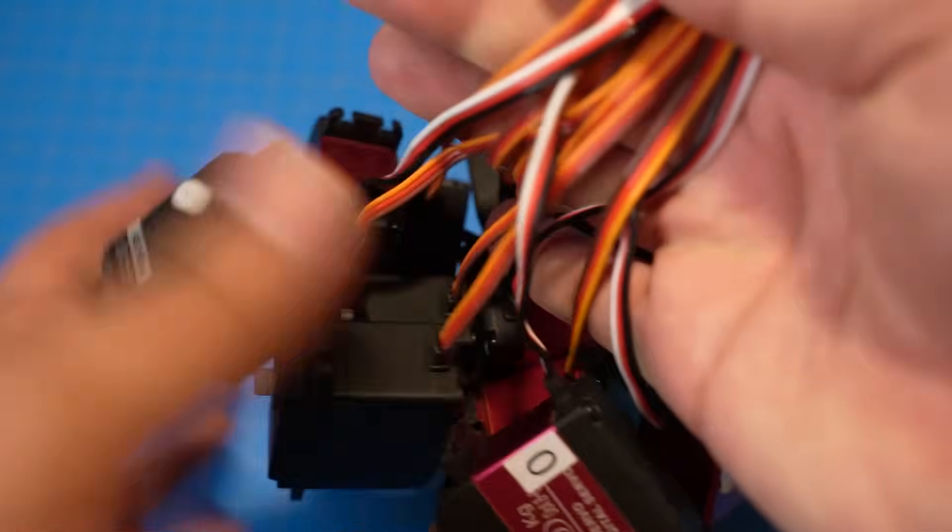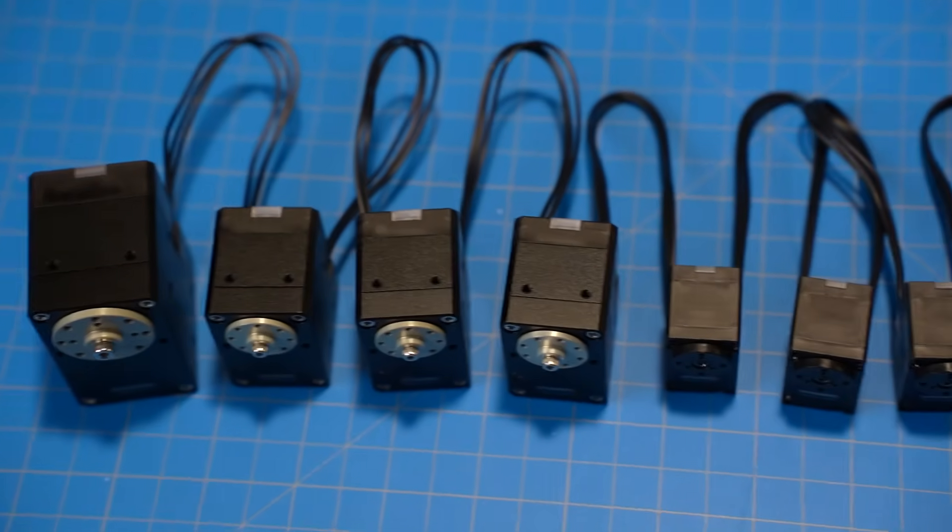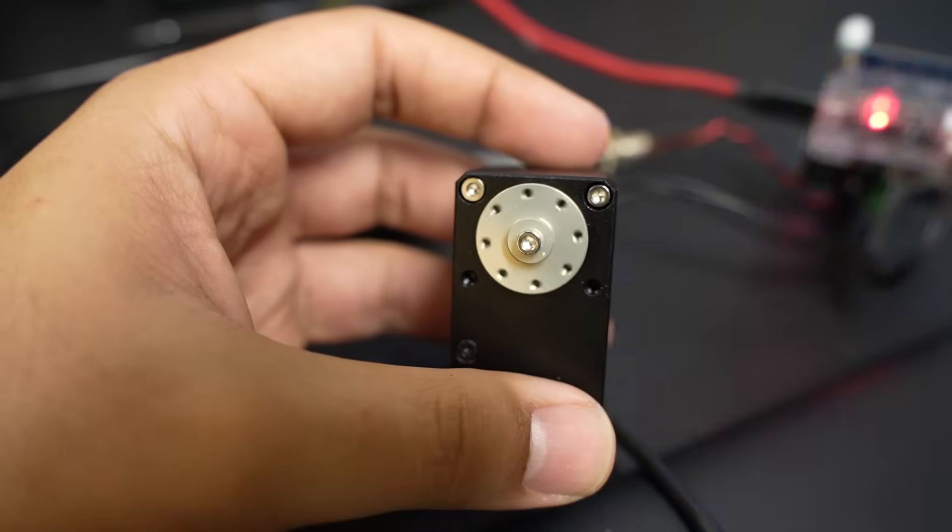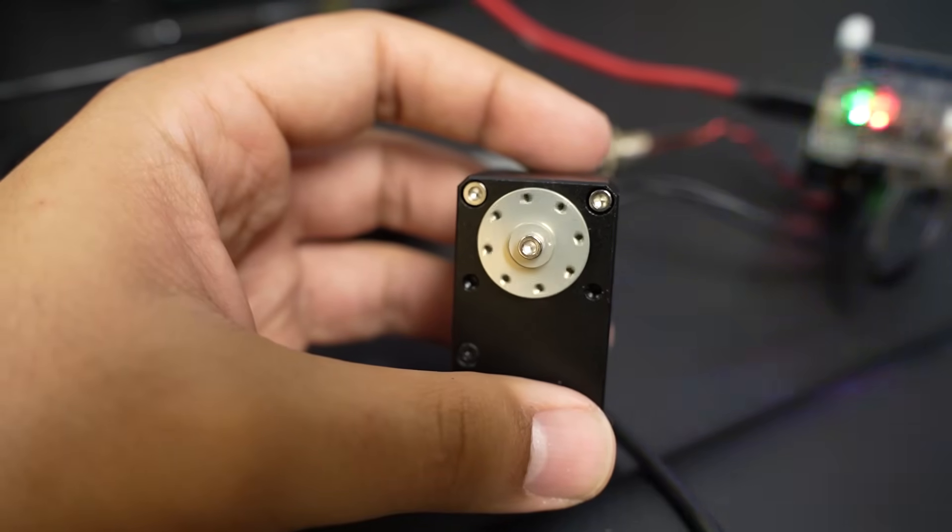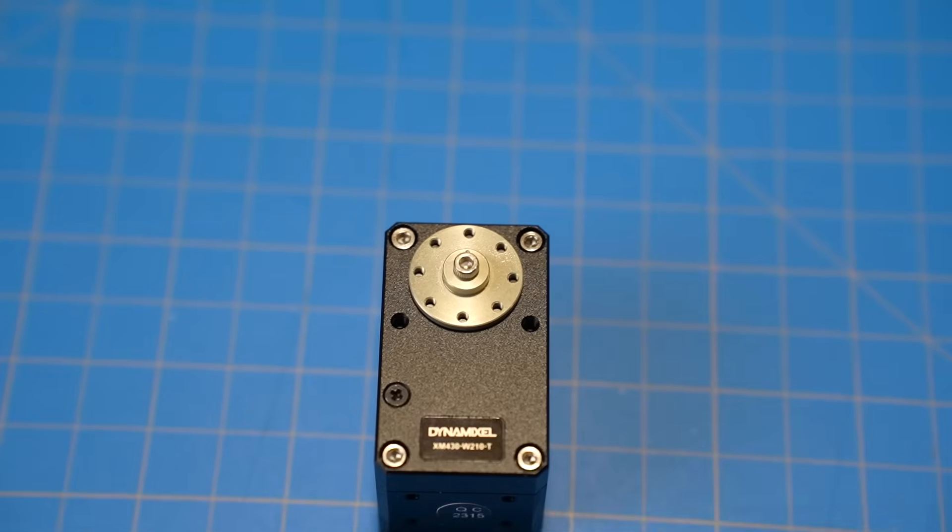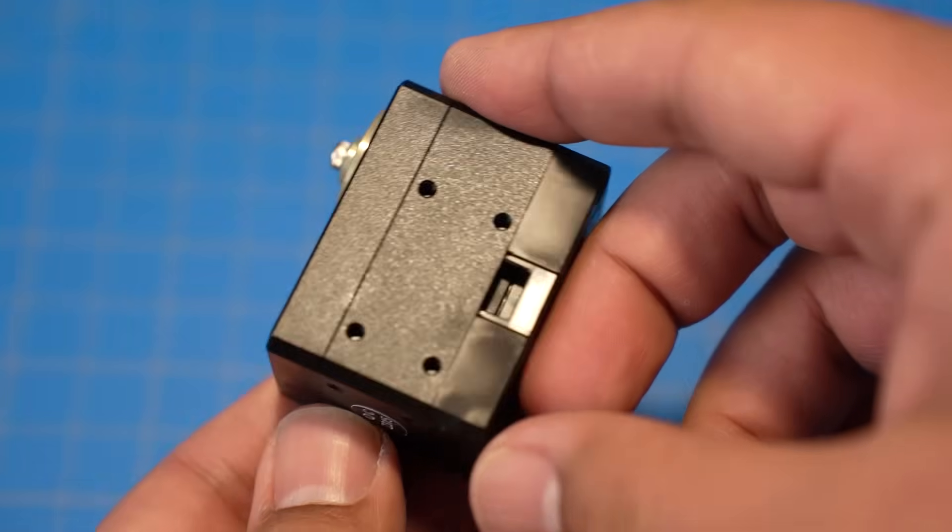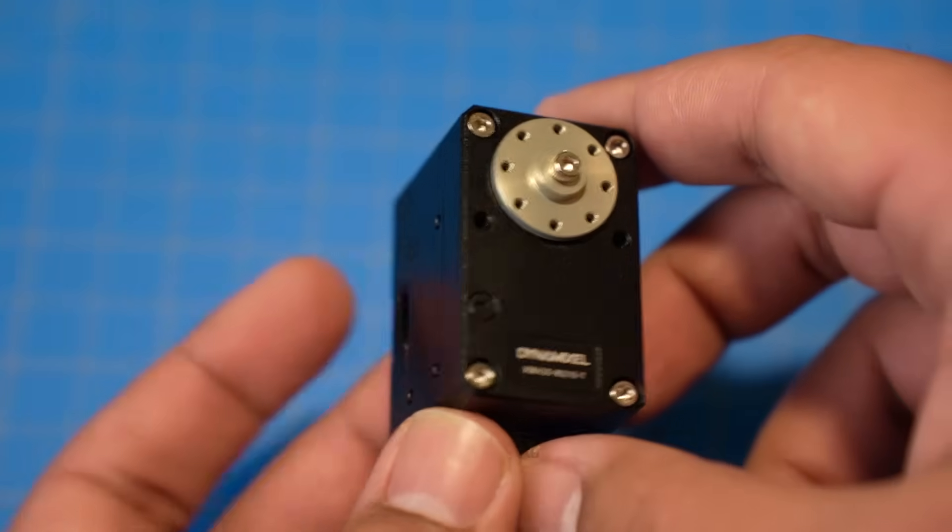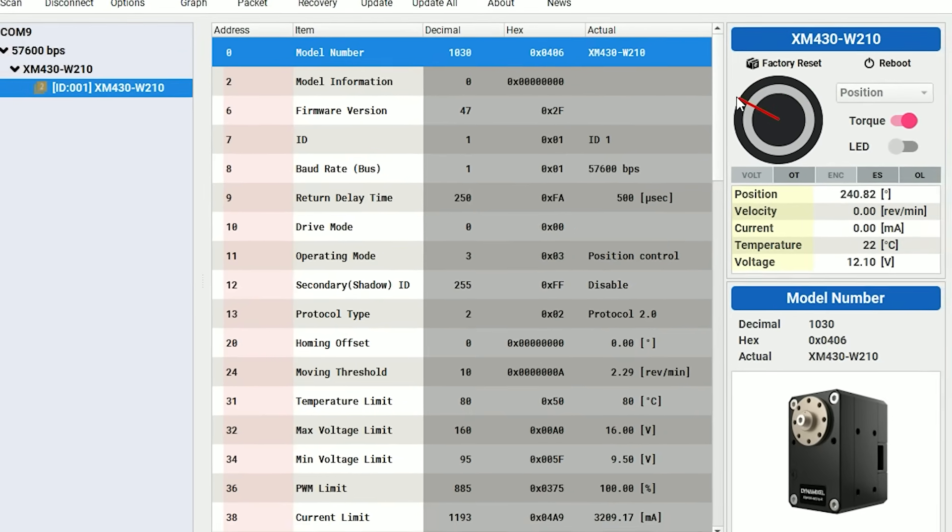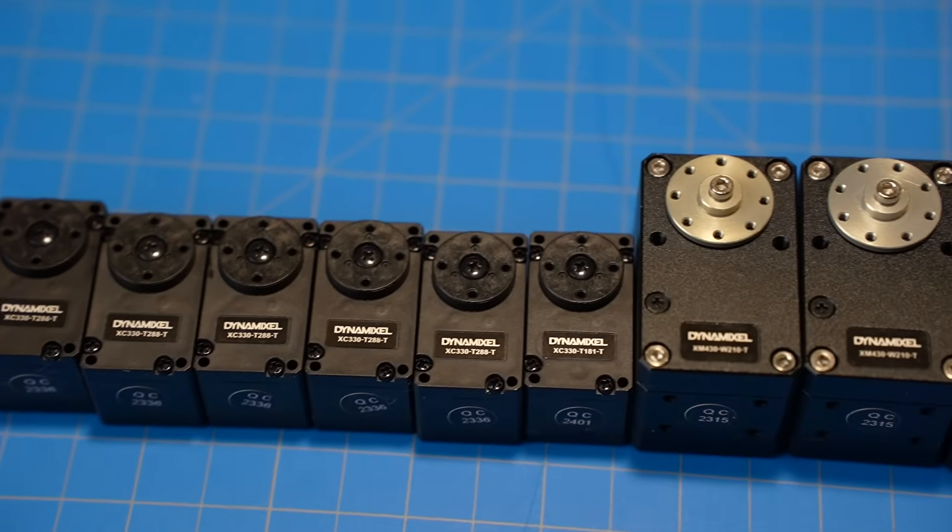So what if instead of a rat's nest of power, ground, and signal wires in parallel, I could daisy chain my motors together? What if instead of a limited range of motion, I had motors that could move 360 degrees or more with accuracy and precision? I don't have to wonder, because the solution is right here. This is a Dynamixel. Dynamixels are smart actuators made by Robotis, and these are a serious upgrade compared to a hobby servo. Each one gives me feedback on position, voltage, acceleration, velocity, and more.